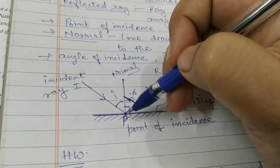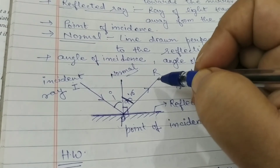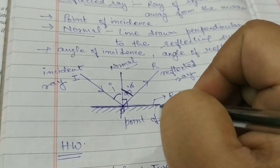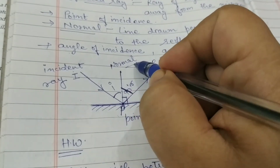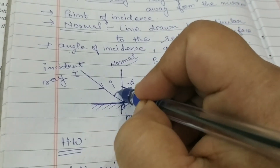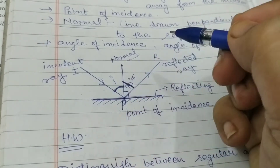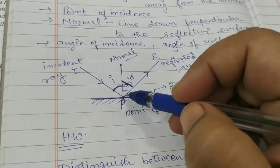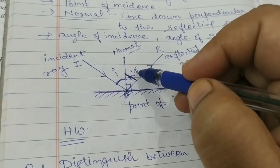The angle between the incident ray and the normal is called the angle of incidence, denoted by small i. The angle between the reflected ray and the normal is called the angle of reflection, denoted by R. These are all the terms you need to remember.